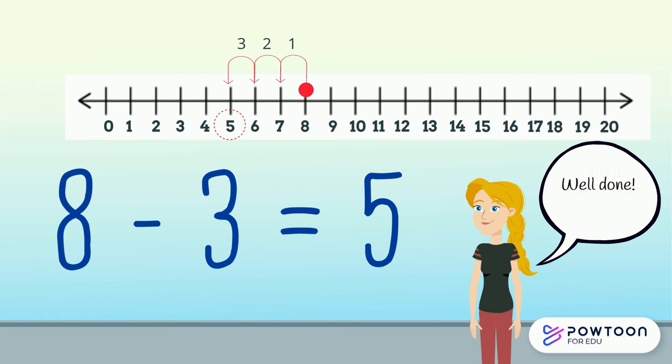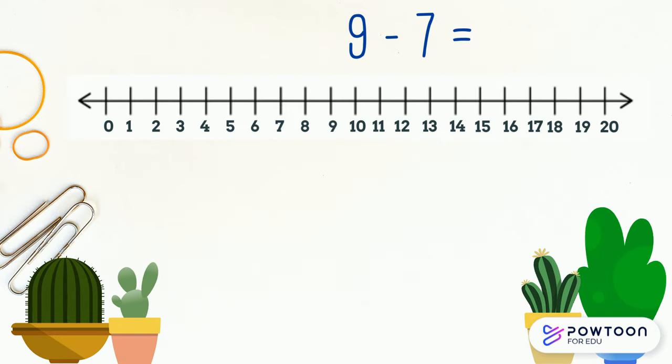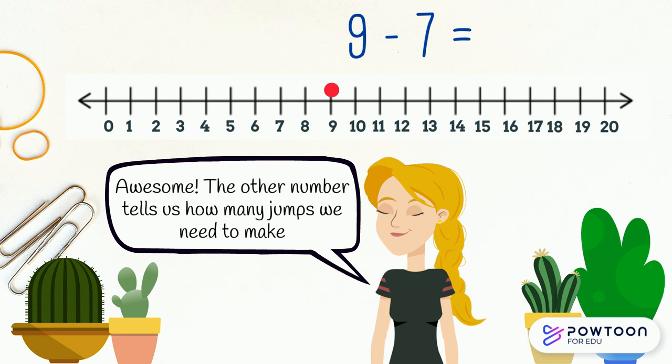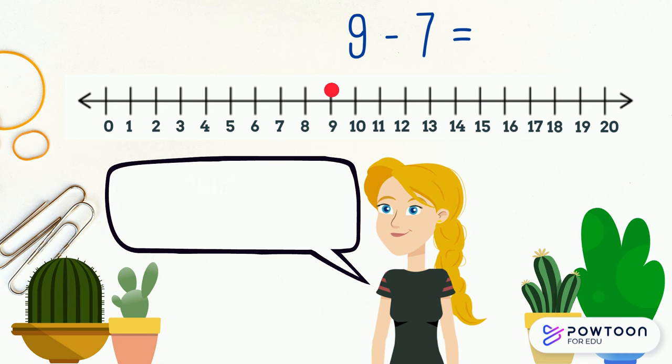Well done. Let's have another go. Nine take away seven. Nine is the whole number. So we find that on the number line and the other number tells us how many jumps we need to make backwards.